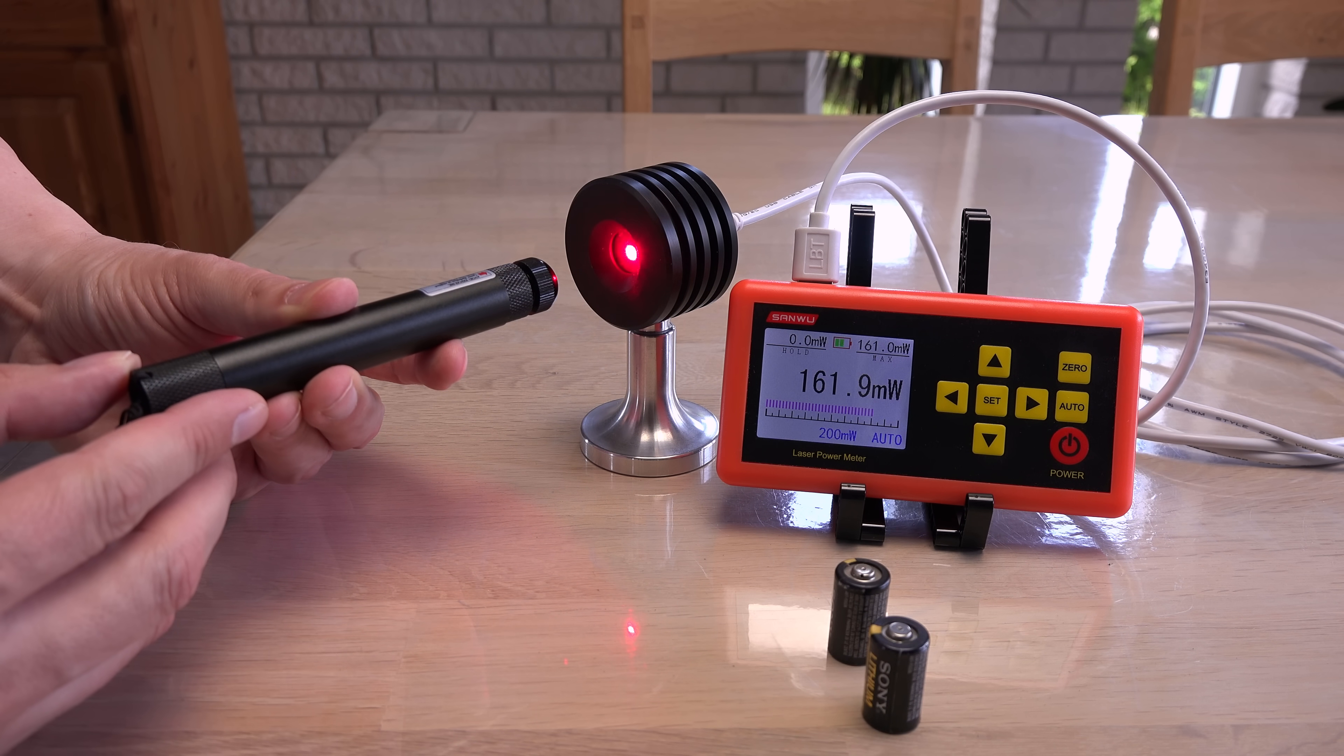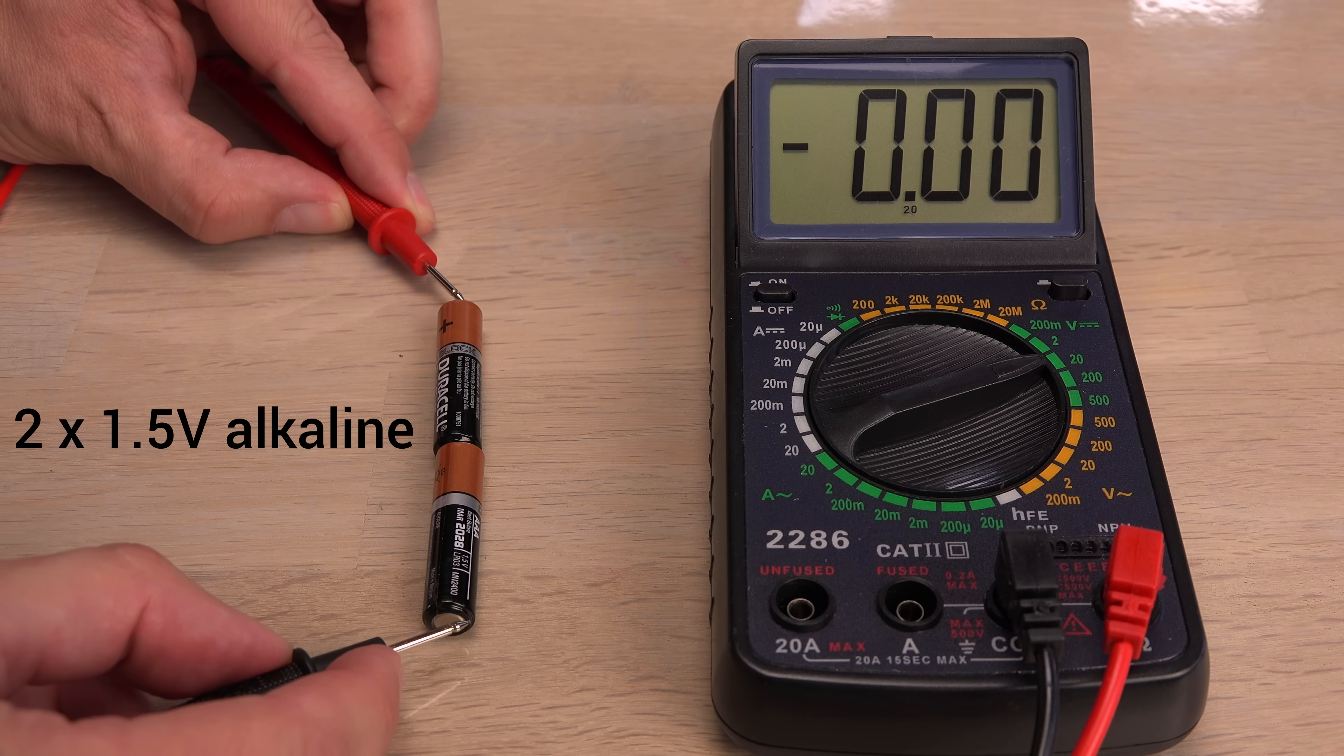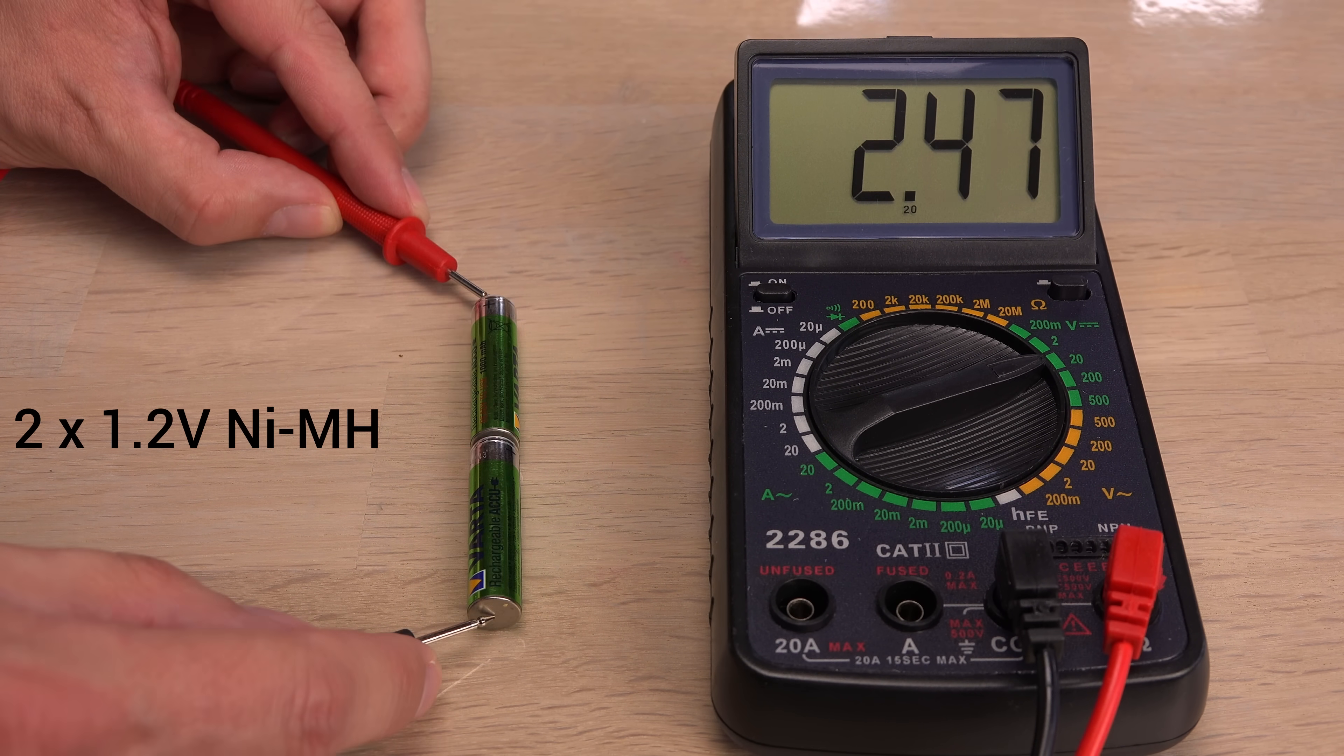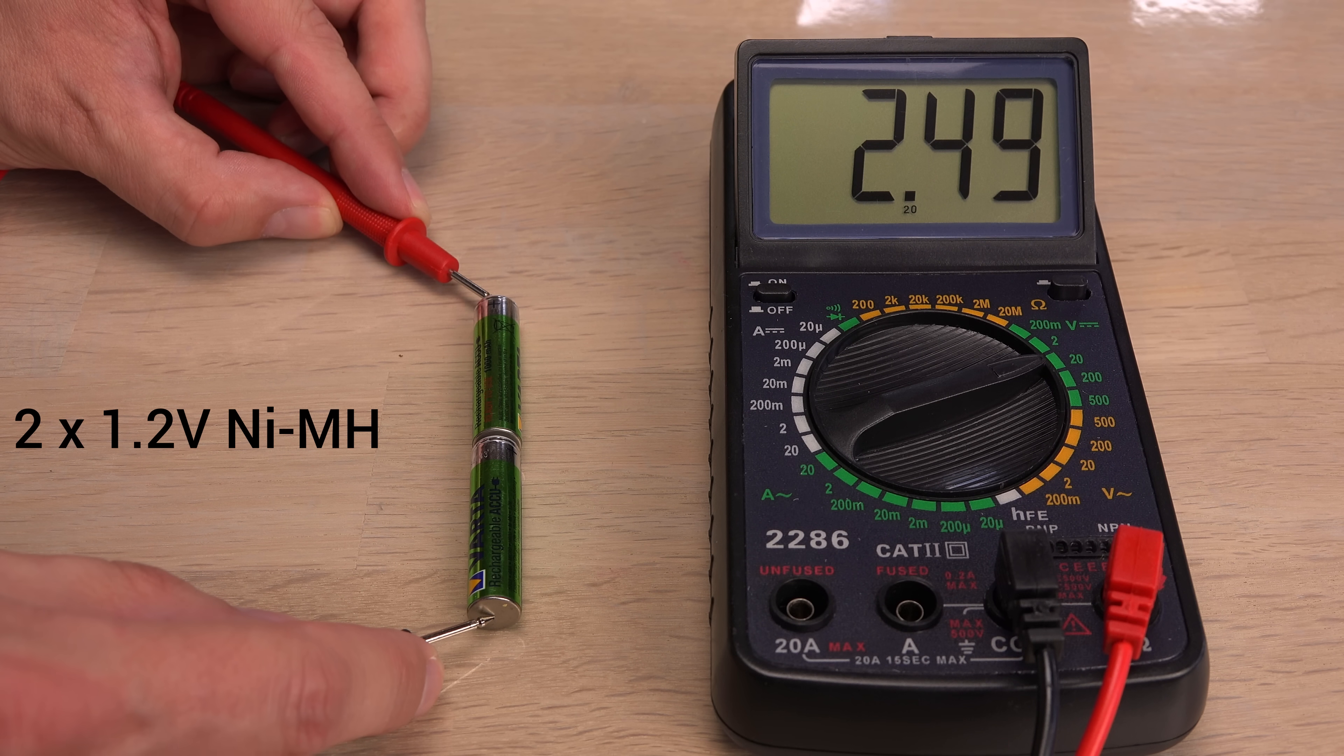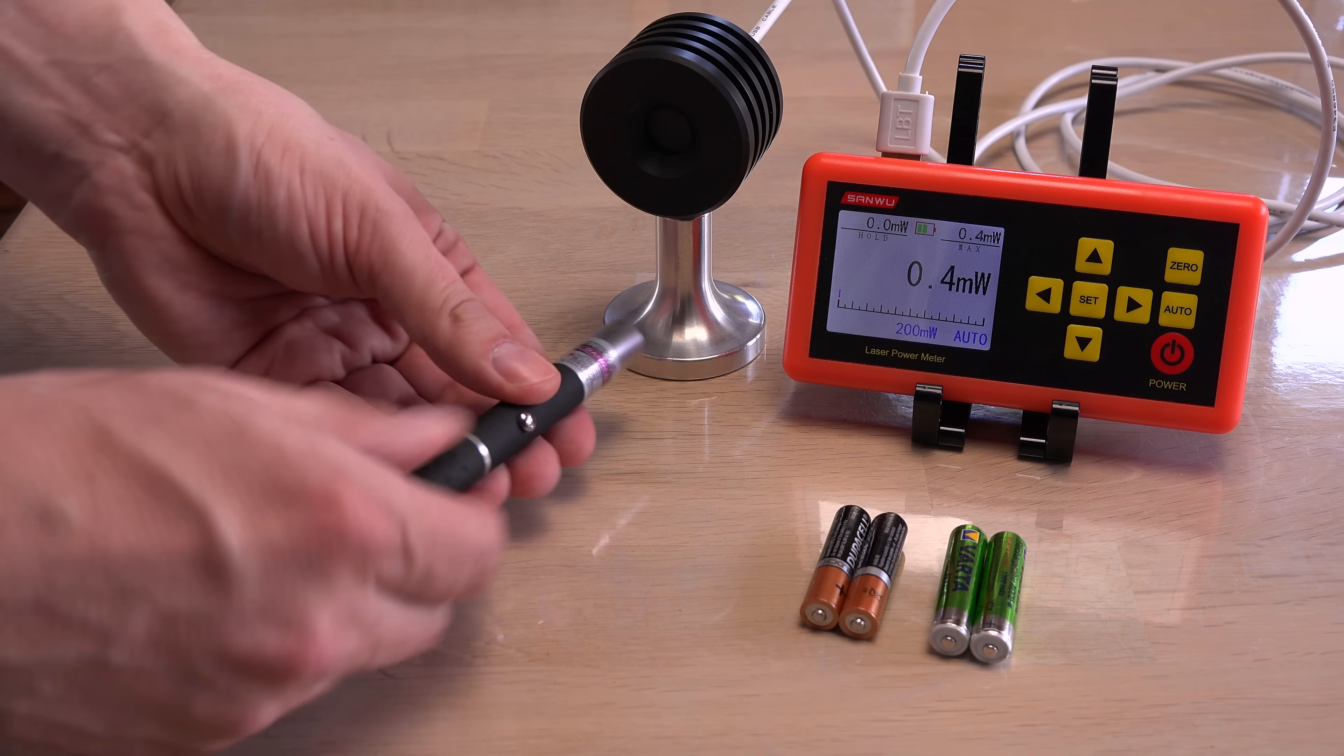Oh yeah, it's alive! Revitalized and kicking out 160 milliwatts again. Makes me wonder if you can lower a laser's power output by simply switching from 1.5 volts alkaline batteries to 1.2 volts rechargeable batteries. For this I will go back to the 50 milliwatt violet laser pointer.